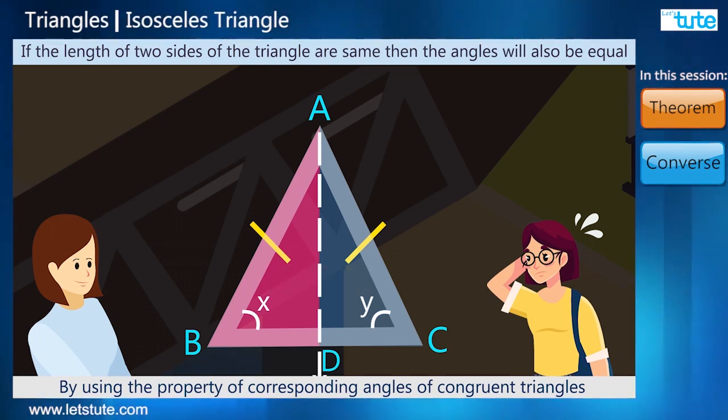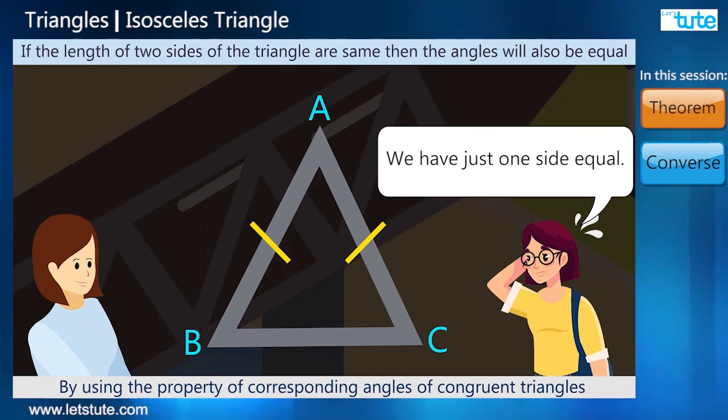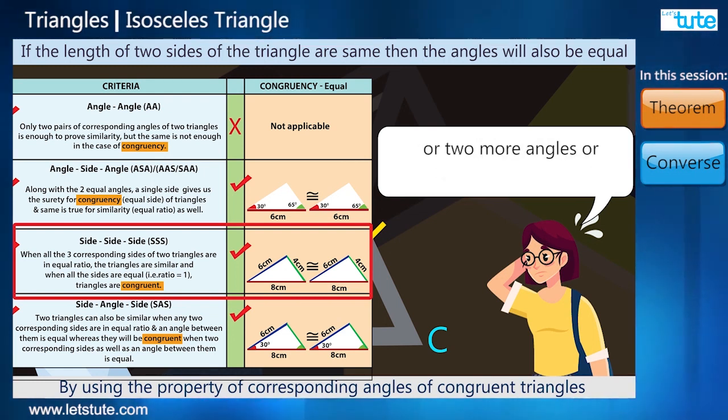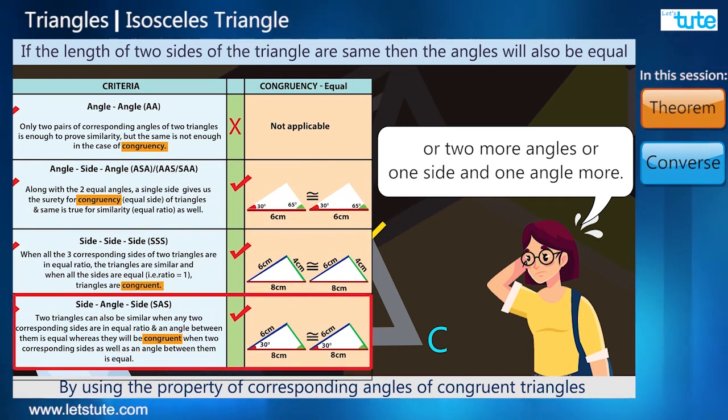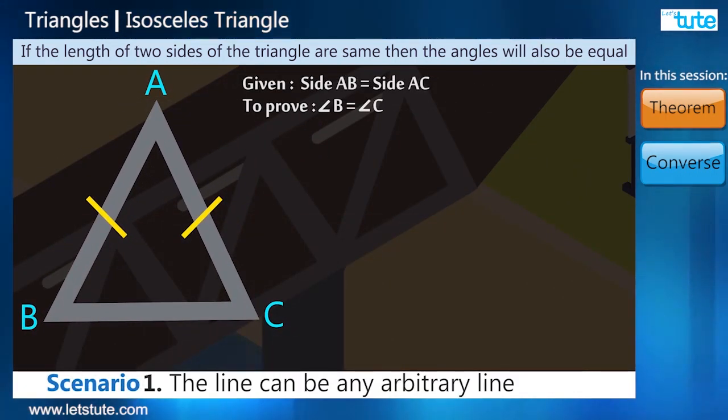But then it popped up in my mind, how will we decide that how to draw this line? We have just one side equal. We will need either two more sides or two more angles or one side and one angle more.